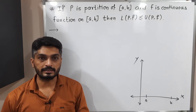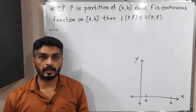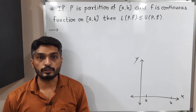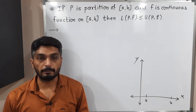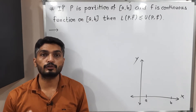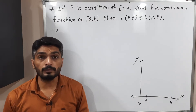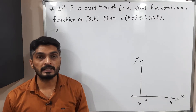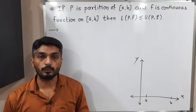Let us discuss this result. In this result, they have said: if f is a continuous function on a closed interval [a, b] and P is a partition of the closed interval [a, b], then we always have the lower sum less than or equal to the upper sum.